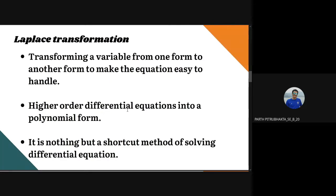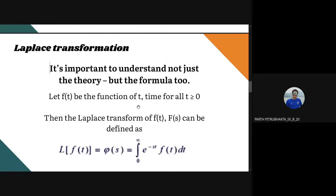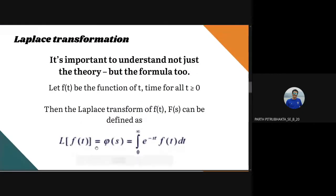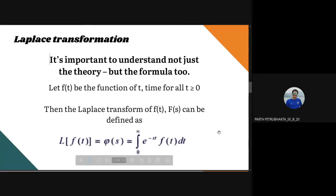Laplace Transform is defined for both stable and unstable systems, whereas Fourier Transforms are defined only for stable systems. Mathematically, Laplace Transform is defined as: L{f(t)} = integral from 0 to infinity of e raised to minus st times f(t) dt, where t is greater than or equal to 0 and f(t) is the function of t.